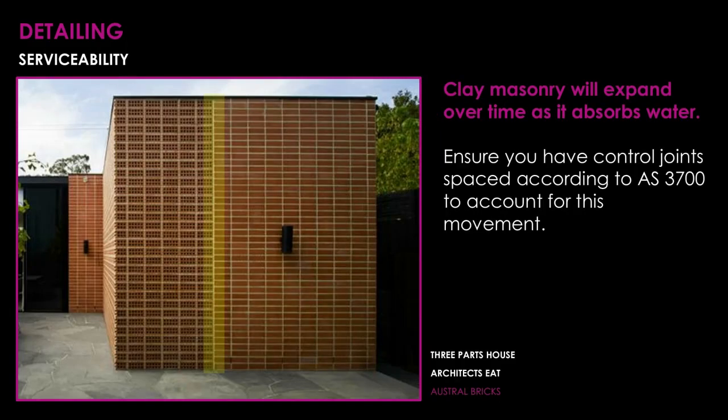Clay masonry tends to expand over time as it absorbs water, so control joints must be included in your design depending on wall length. Stack bonding actually offers an advantage here — as seen in Three Parts House by Architects VAT, you can expose the control joint as a design feature separating two different stack bond types. The continuous perpendicular joint makes it easy to implement control joints naturally in the design.